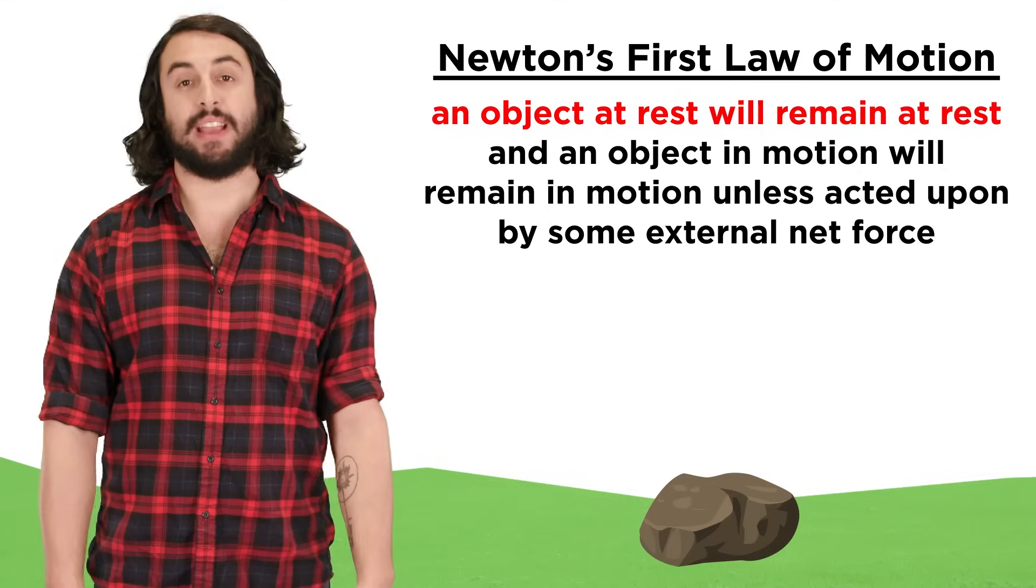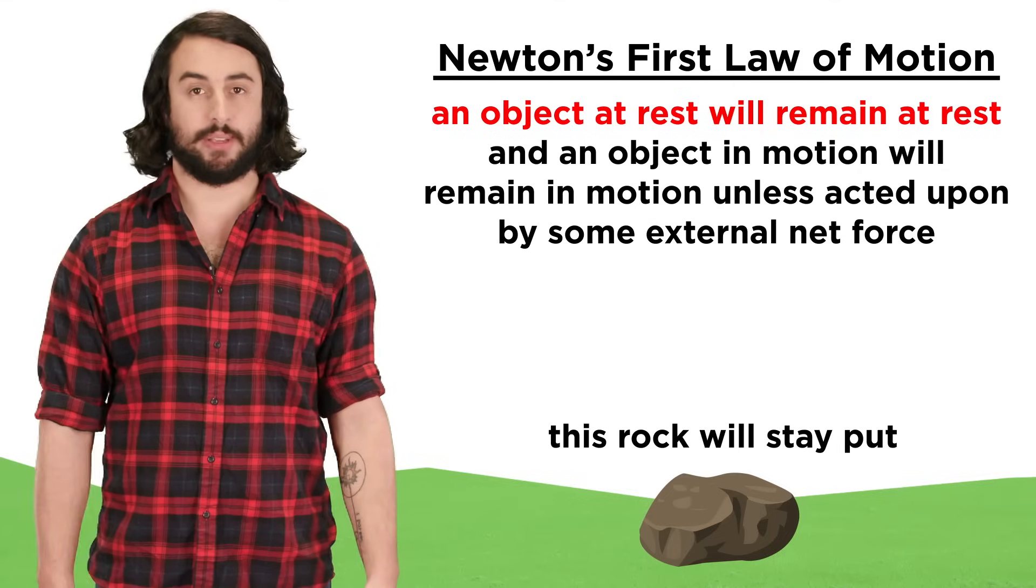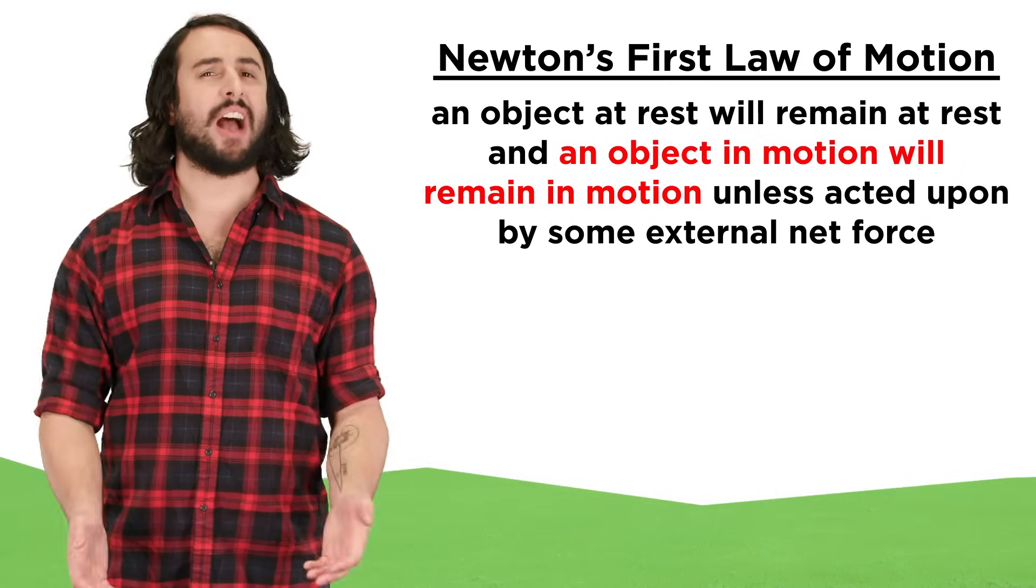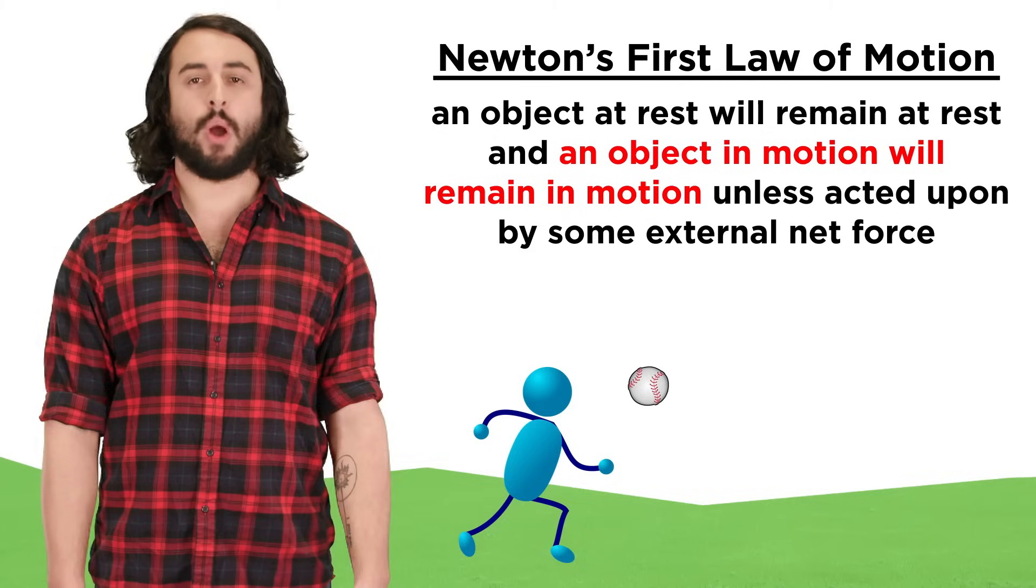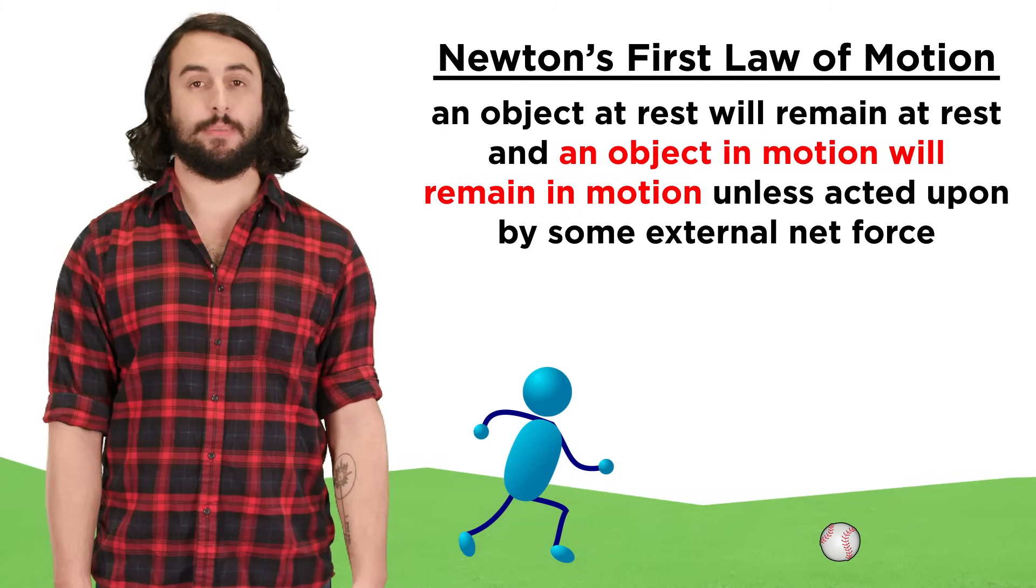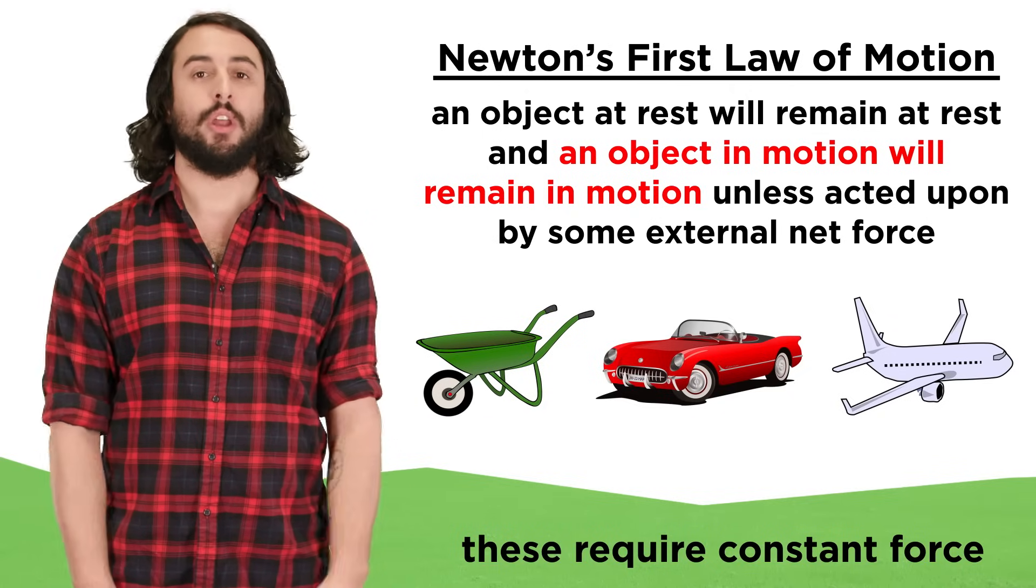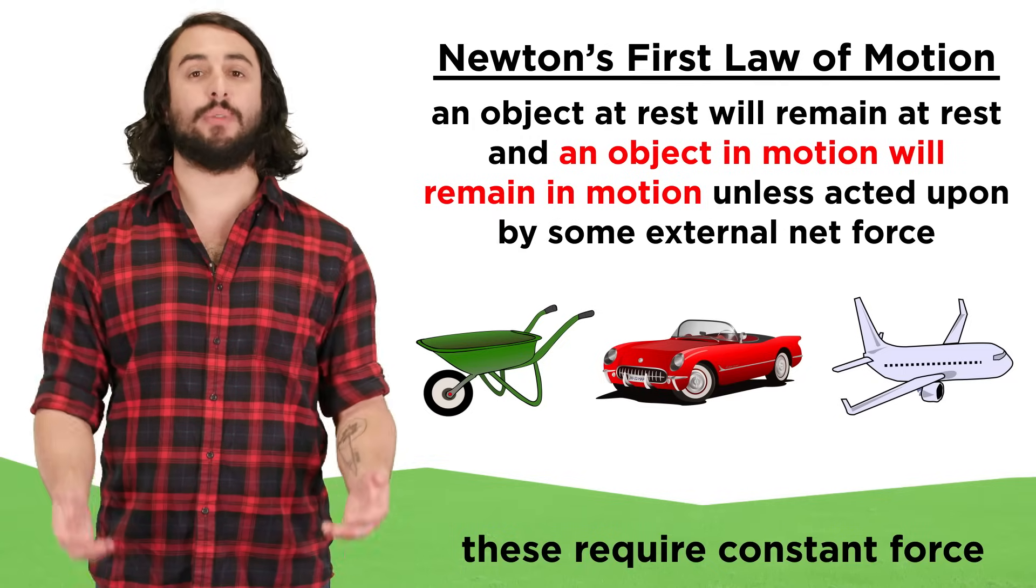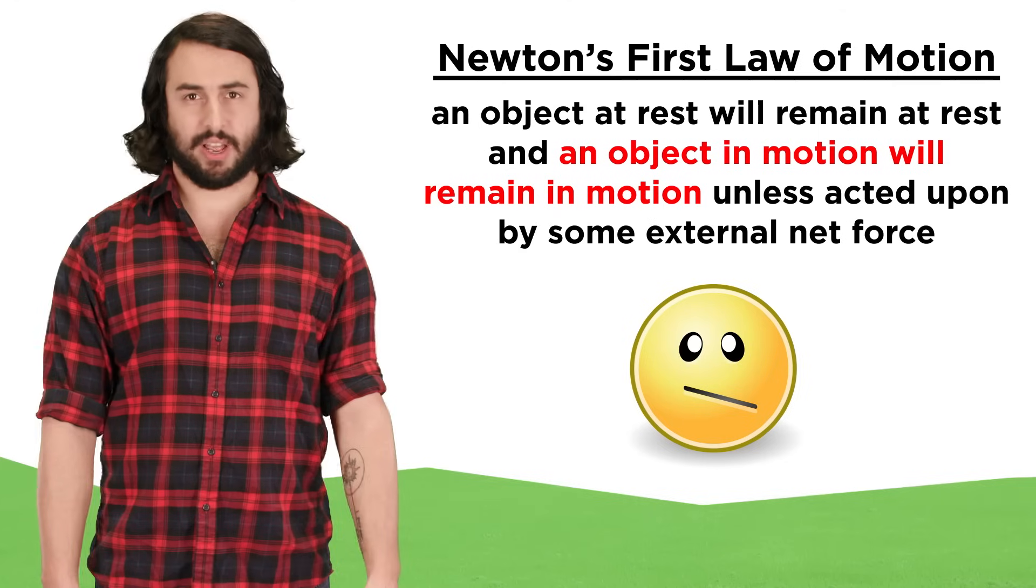The first part seems to make sense since motionless objects typically don't just start moving, but the second part contradicts much of our everyday experience. When you throw a ball, it doesn't keep moving forever, it eventually stops. For a wheelbarrow to roll, or for your car to move, or for a plane to stay in the air, a constant force must be applied. So where did Newton come up with this stuff?